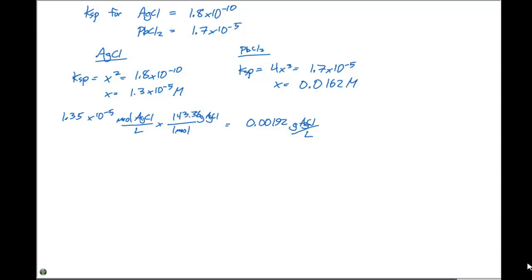And if we go one step farther, and we multiply this times 0.004 liters, or 4 milliliters, we can say that 7.7 times 10 to the minus 6 grams of silver chloride dissolves in 4 milliliters of aqueous solution.